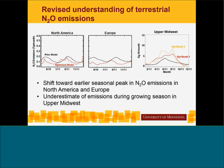I wanted to mention some work we've been doing using those surface data to better understand terrestrial N2O emissions. I have timelines here from North America and Europe showing two-year timelines of N2O emissions — our prior model in black and our optimized model in red. In both regions, we see a shift toward an earlier seasonal peak in emissions based on observations: our prior model peaks in the summertime, but observations push those emissions toward an earlier springtime peak. In the upper Midwest, emissions are strongly underestimated, particularly during the growing season.